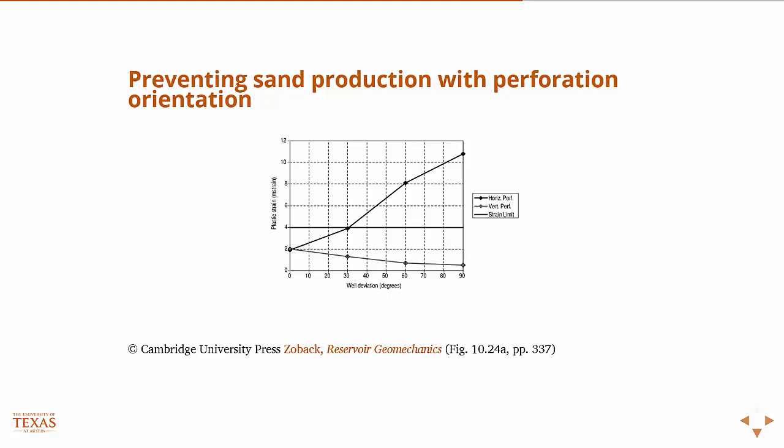One way to prevent sand production is through controlling the drawdown. Another way you might be able to prevent sand production is through oriented perforation. This would be in a setting of a cased and cemented well, where you have to perforate the well in order to produce it.